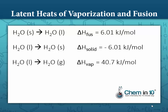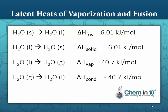Going from liquid to gas, the latent heat of vaporization is 40.7 kilojoules per mole. That means for every mole of liquid water you want to vaporize, you need to input 40.7 kilojoules. The opposite process — condensing water vapor to liquid — gives off negative 40.7 kilojoules per mole. It's negative because it's exothermic.